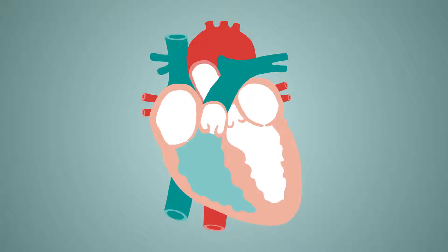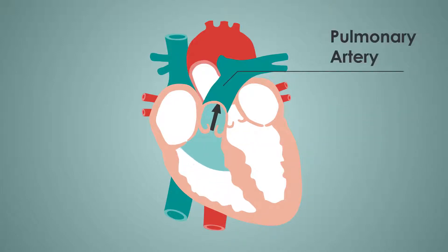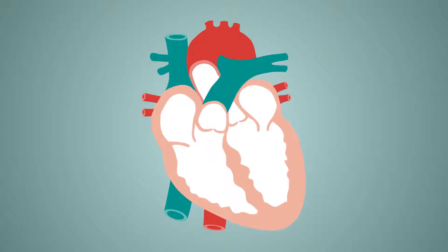The right ventricle then contracts, with the resultant pressure causing the shutting of the tricuspid valve and the opening of the pulmonary valve, ejecting deoxygenated blood into the pulmonary artery. This deoxygenated blood travels to the lungs via the pulmonary artery.